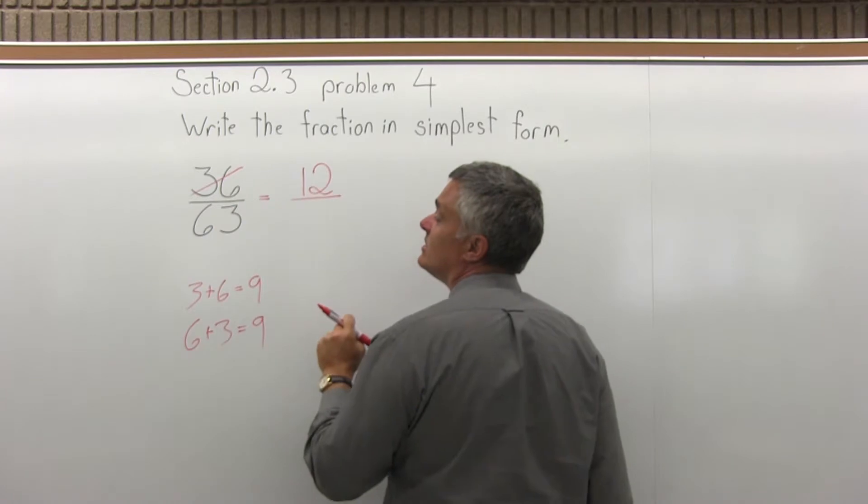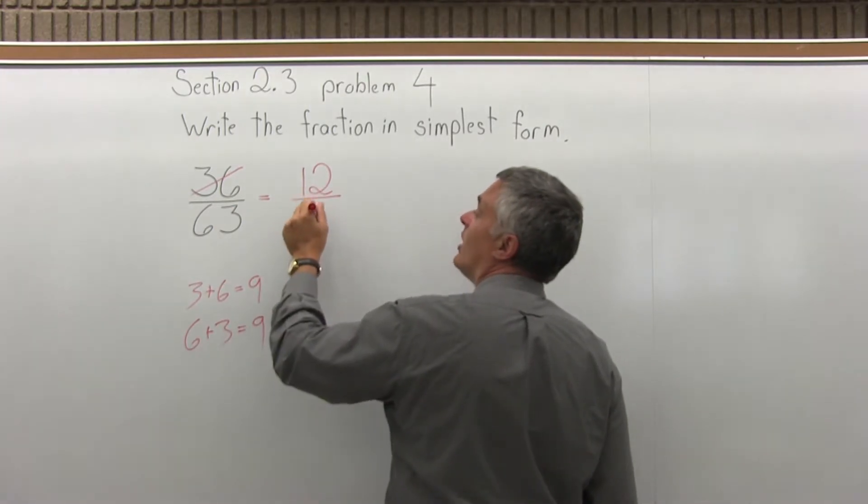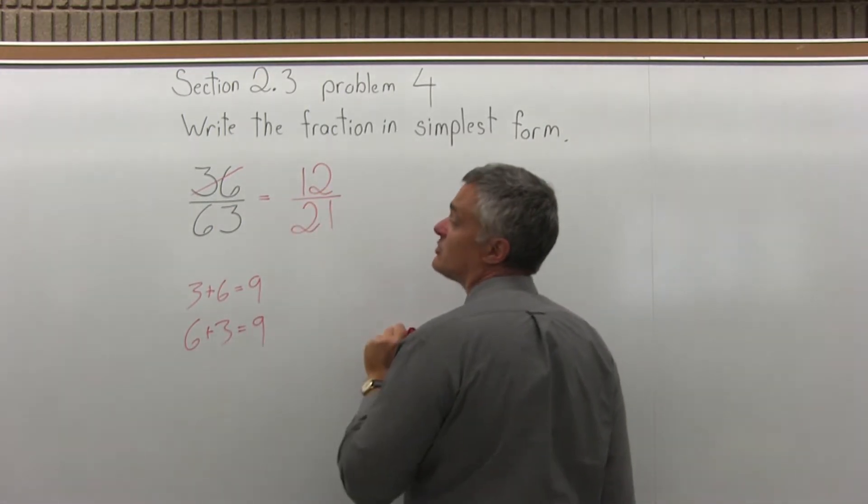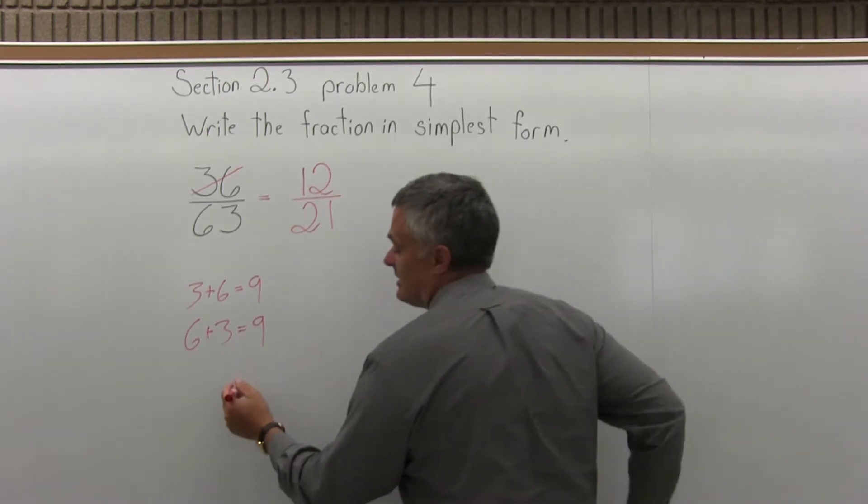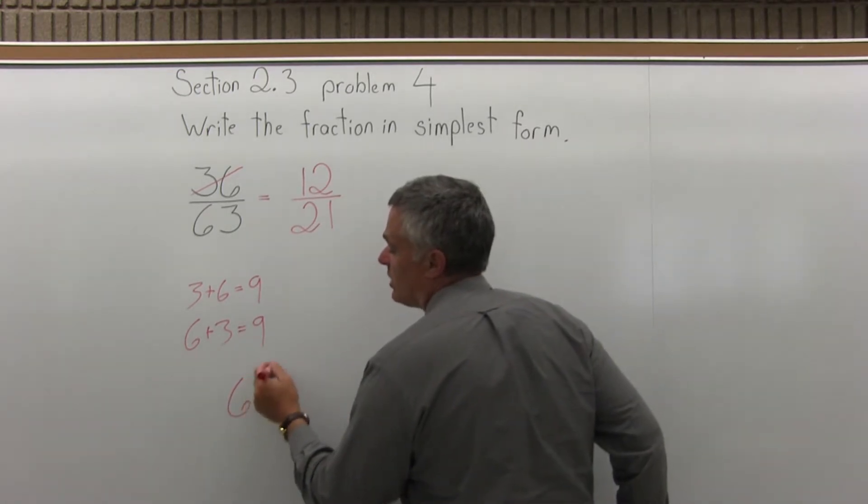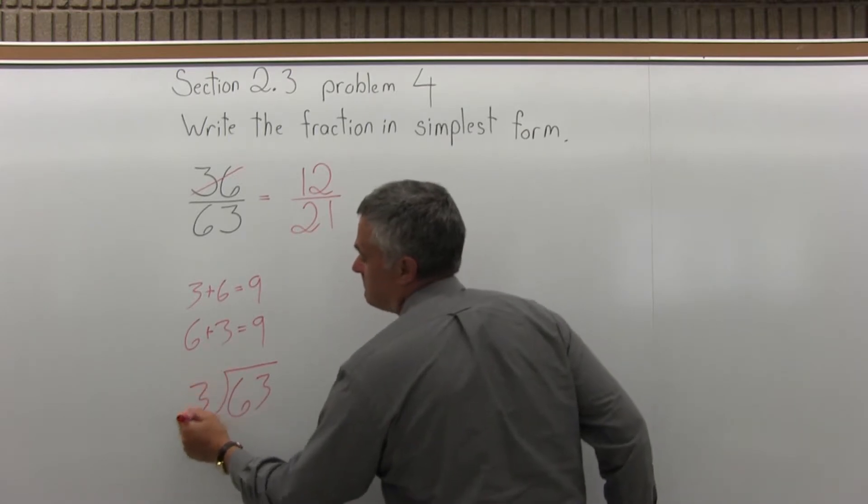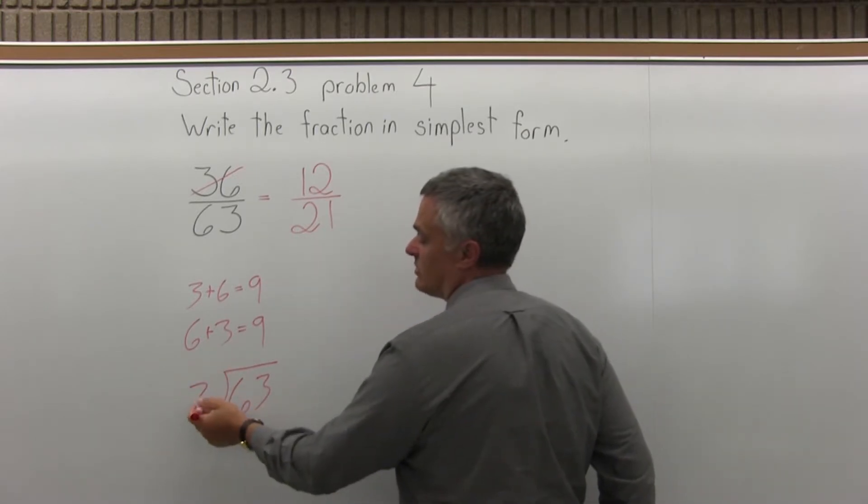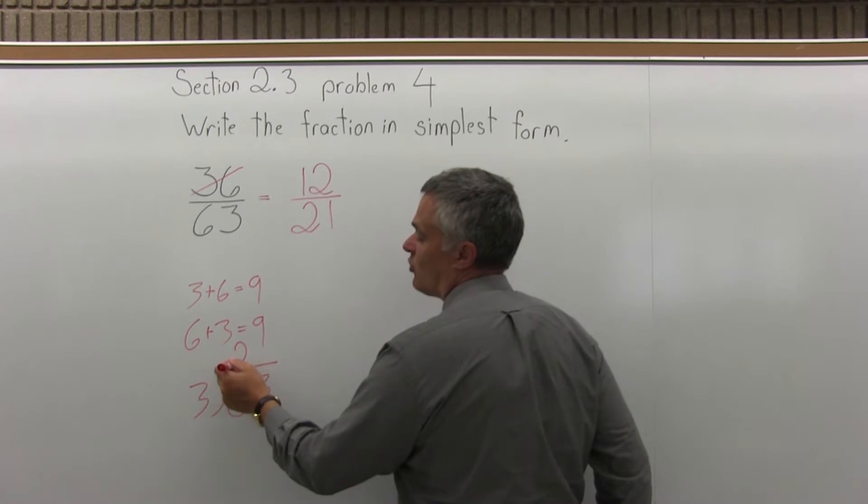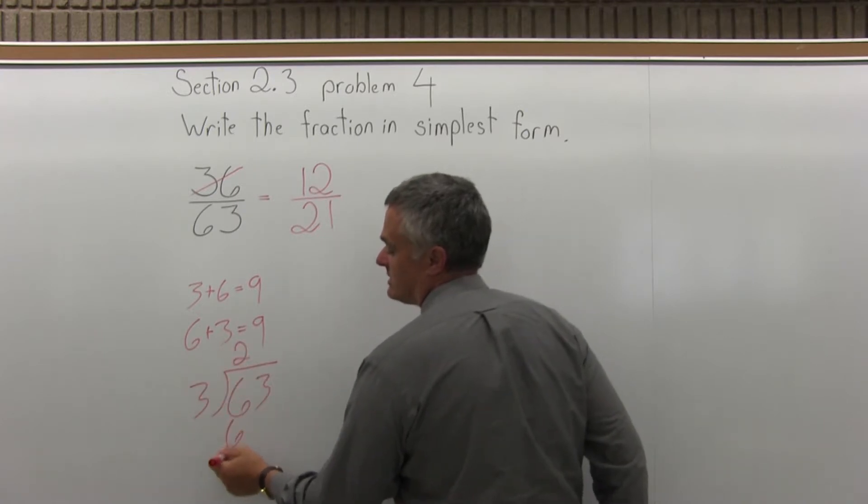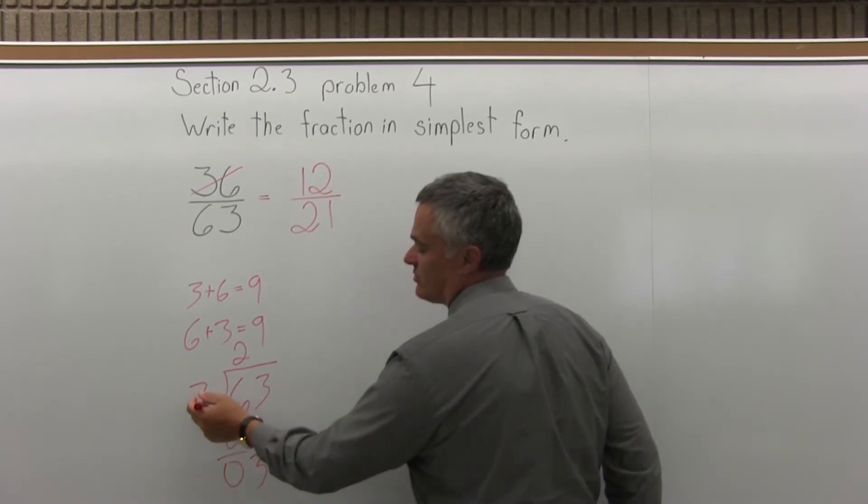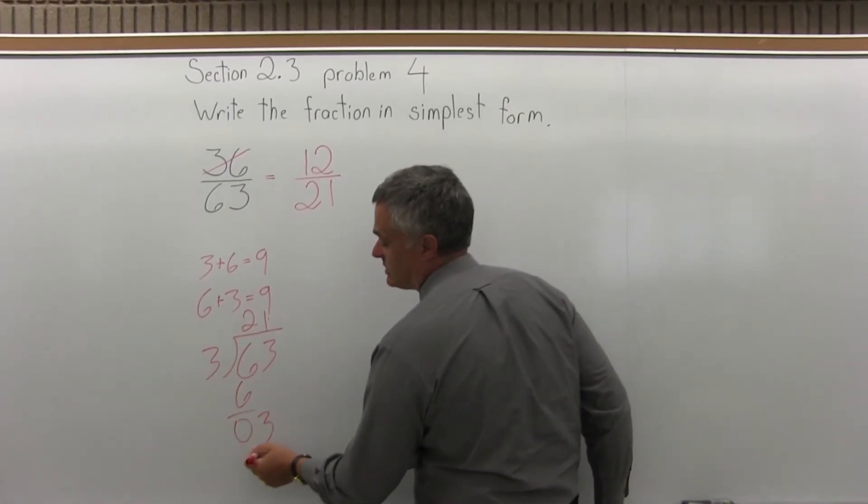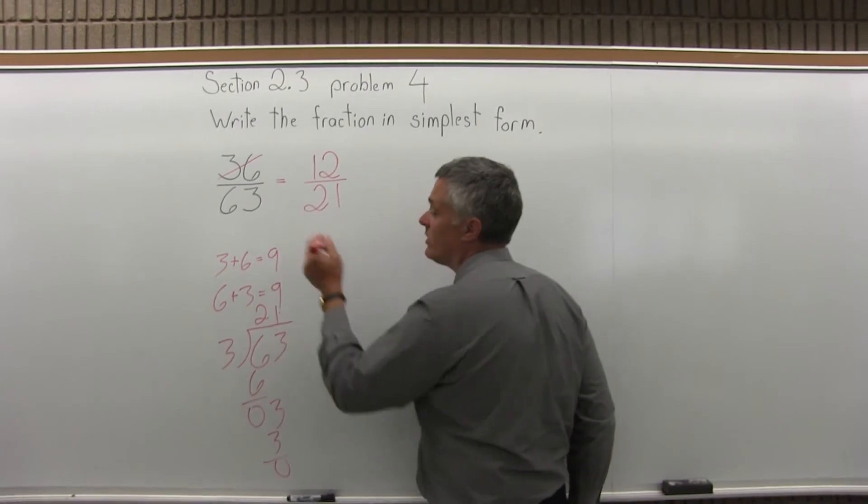3 goes into 63 21 times because 3 times 21 is 63. And I can see that the answer is 21, but if you don't, just take a minute and do the division. So 3 goes into 6 twice. 2 times 3 is 6. If you subtract, it goes in evenly. Bring down the next digit. 3 goes into 3 once. 1 times 3 is 3. Again, it goes in evenly. And that's the 21.